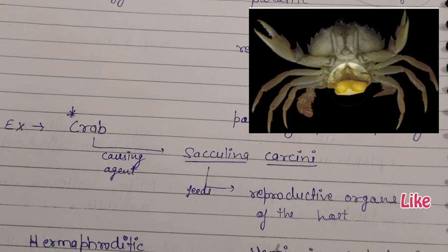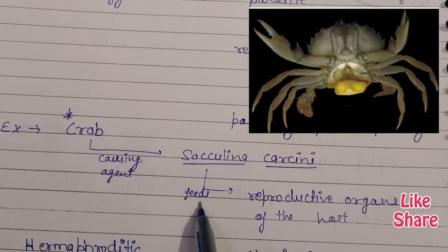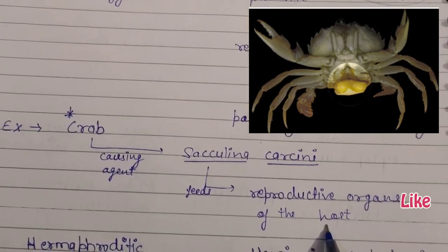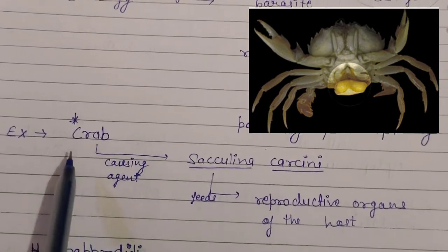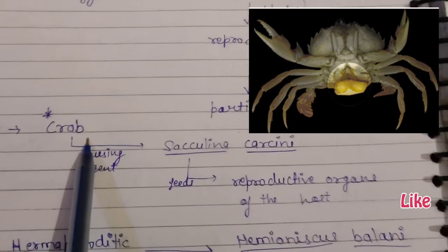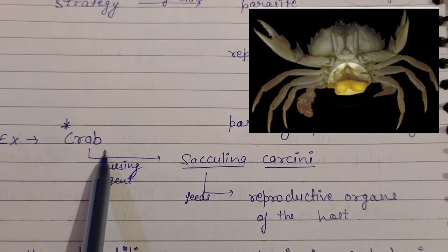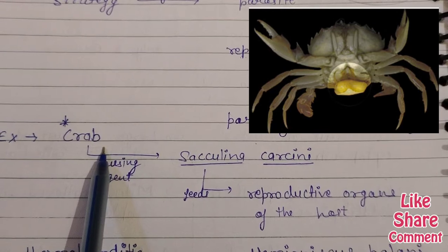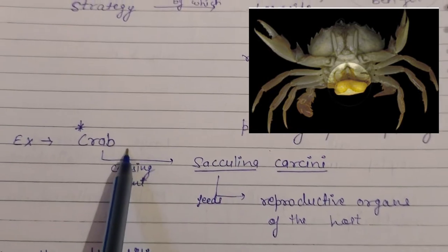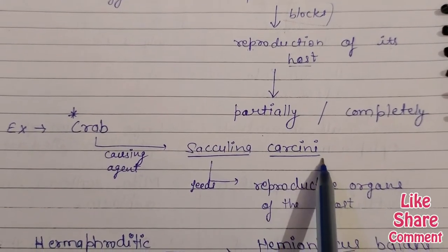The presence of Sacculina carcini feeds on the reproductive organs of the host crab. The crab is the host, and the parasite consumes the crab's reproductive organs — this is the condition of parasitic castration in the crab caused by Sacculina carcini.